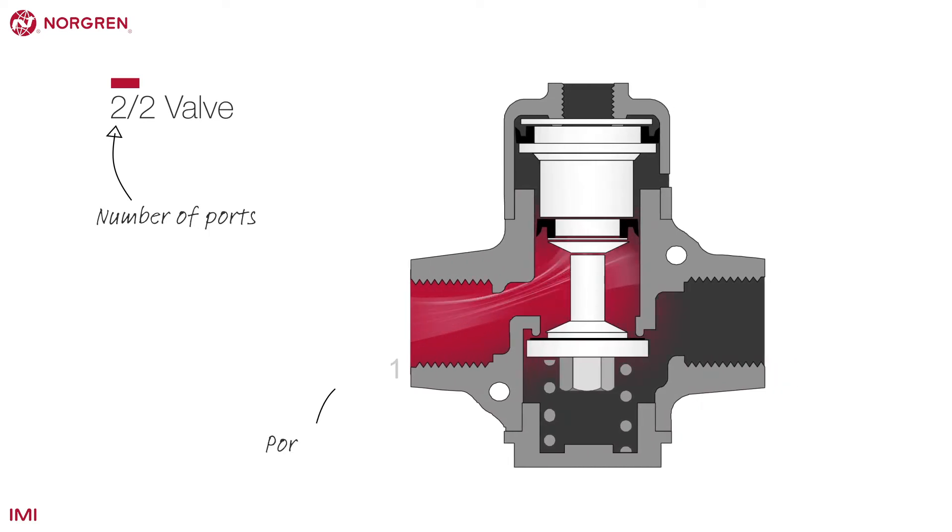The first number represents the number of ports on a valve. Only the ports on the main body are counted, and the smaller ports on a pilot valve, for example, are not included.